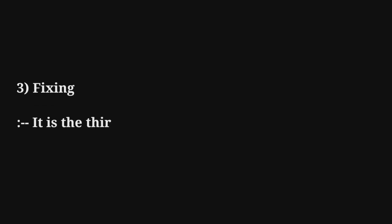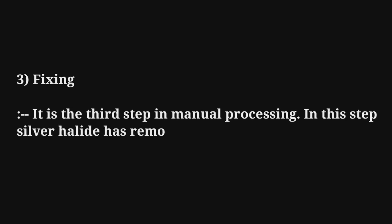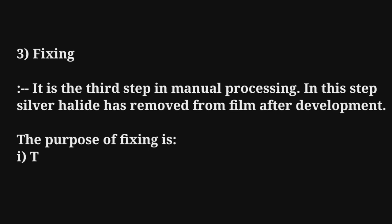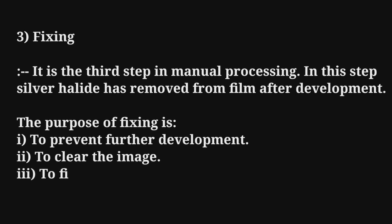Fixing is the third step in manual processing. In this step, silver halide is removed from the film after development. The purposes of fixing are to prevent further development, to clear the image, and to fix the image.